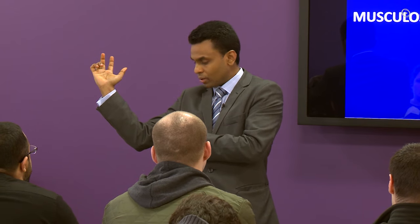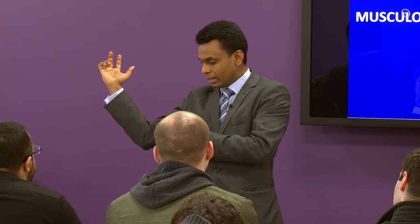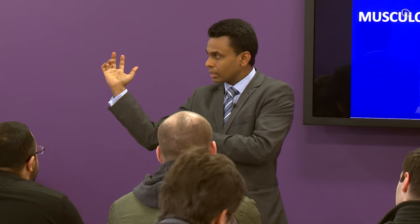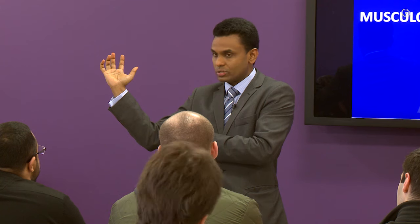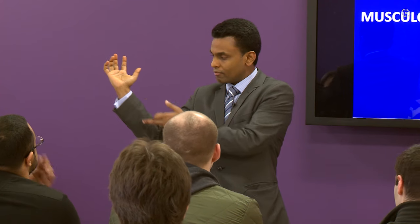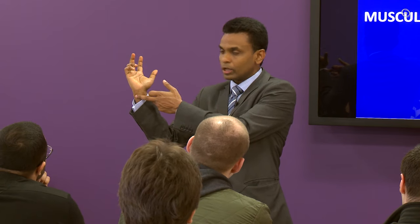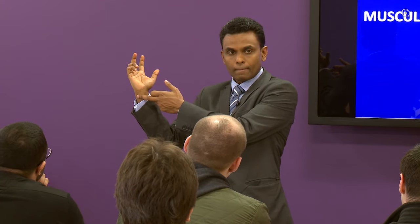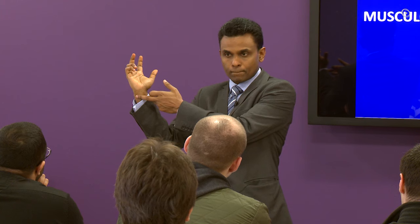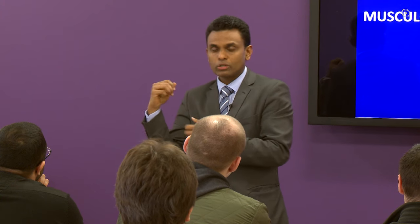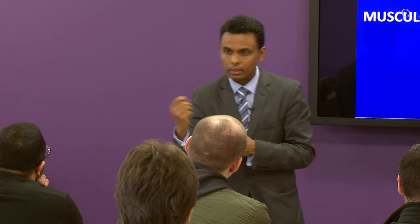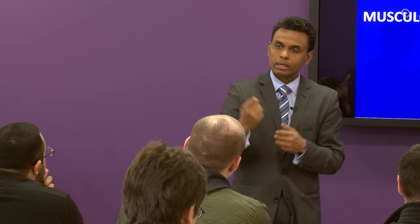That is the ulnar nerve paradox. If you have a high lesion, the clawing is less. If you have a low lesion, the clawing is more — because in a high lesion the FDP to the medial digits is also affected, reducing the deforming force.